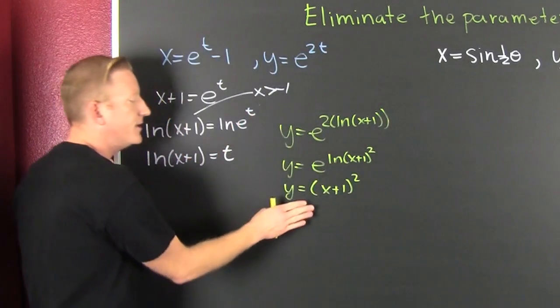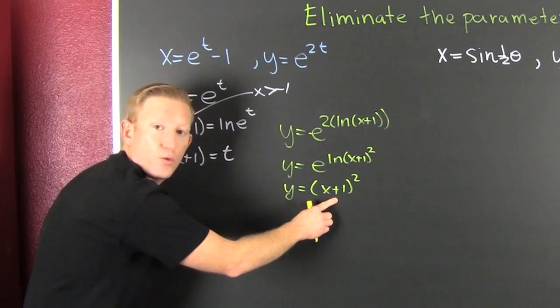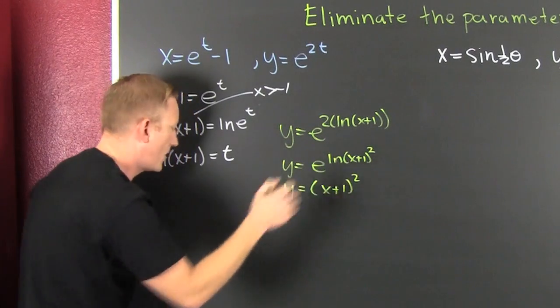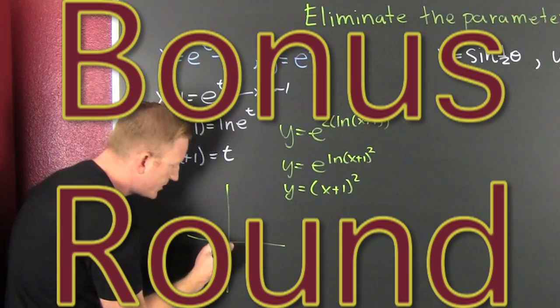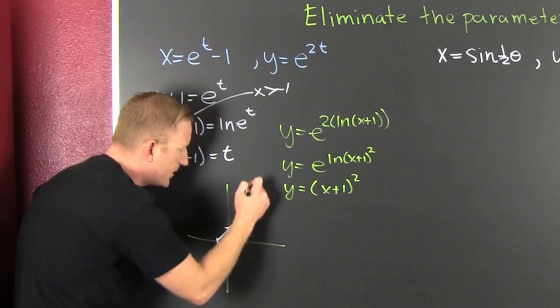So now we use more property of logarithms: e to the natural log of stuff is stuff, x plus one squared. And we see that this is going to be a parabola shifted which way? Shifted left one because it goes opposite the way you think. So that parabola right there, it's going to be shifted left one unit.